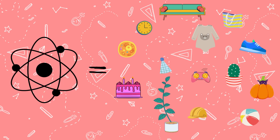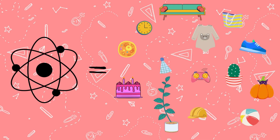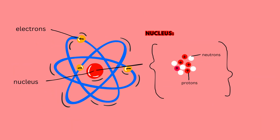Overview of atoms. Atoms are the fundamental building blocks of matter. They consist of a positively charged nucleus composed of protons and neutrons, surrounded by a cloud of negatively charged electrons. The arrangement of electrons around the nucleus is not random but follows a specific pattern governed by electron shells.